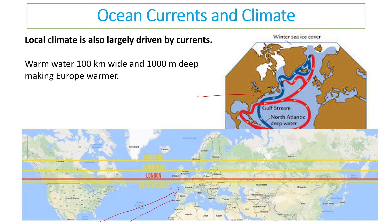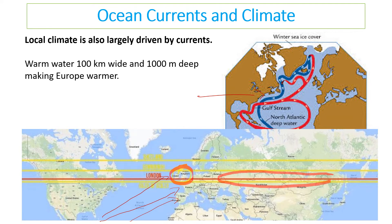Water from the conveyor belt coming up from the Gulf of Mexico warms Europe and the UK. The UK's average temperature in summer is about 25–30 degrees and in winter about five or six degrees. If the UK were far away from the sea it would be much colder, as is the case for areas far from the ocean.